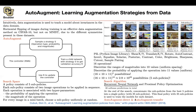You can run auto-augment directly on the dataset you have at hand — for instance, finding the best augmentation policy for CIFAR-10 or MNIST. Or you can do transfer: maybe you find an auto-augmentation policy for CIFAR-10 and then transfer it to ImageNet, applying the same operations. CIFAR-10 ends up being a proxy task for ImageNet.